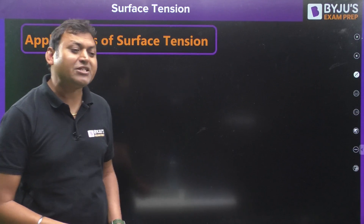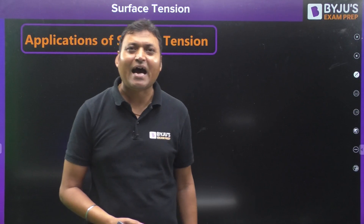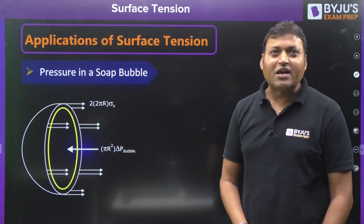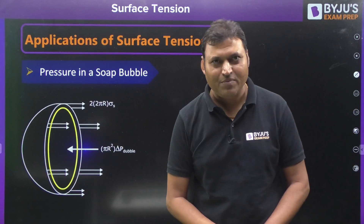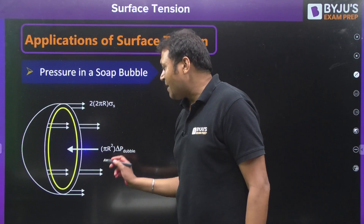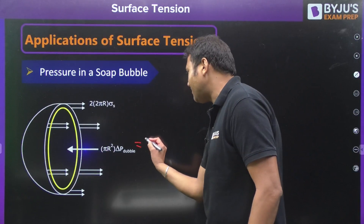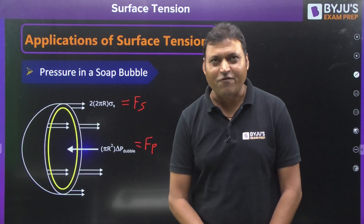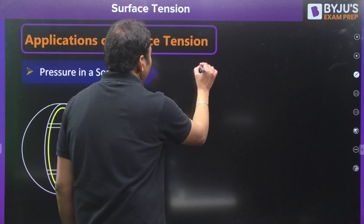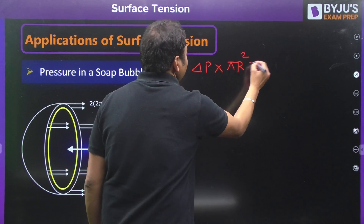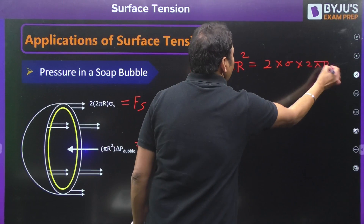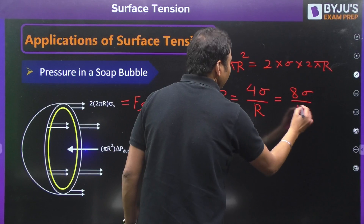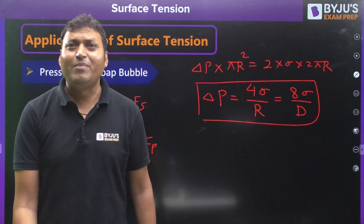For a soap bubble, there are two interfaces — inner and outer — so the total surface tension force is twice that of a liquid drop: 2 × σ × 2πr. Setting the bursting pressure force equal to the surface tension force: ΔP × πr² = 2 × σ × 2πr, giving ΔP = 4σ/r = 8σ/d, where d is the diameter of the soap bubble.